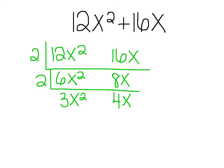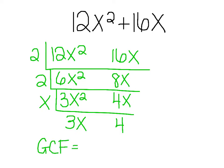Now I look at the letters. I've got x² and x — is there a letter that goes into both? Yes, x. Carry down the 3: x² divided by x is x. And 4x divided by x is 4. Is there a letter or number that goes into both of those? No, so I'm done. My GCF is the numbers on the side: 2 times 2 times x, which gives me 4x.